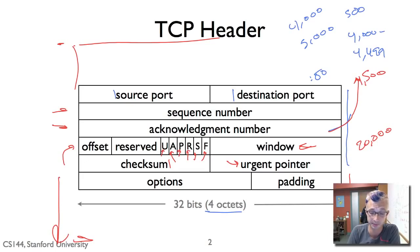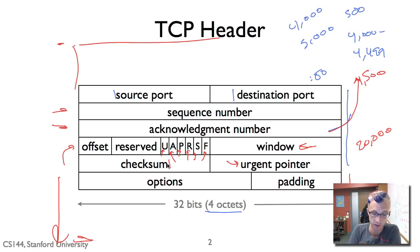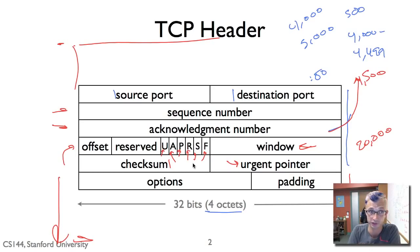So that's the basic TCP header. We have the source and destination ports; the sequence numbers for the data and acknowledgements; the offset field to tell you where data begins; the urgent and push bits for urgent or immediately-deliverable data; the ACK bit indicating the acknowledgement number is valid; the SYN bit for synchronizing the sequence number; the FIN bit for tearing down a connection; the reset bit for resetting a connection; the window for flow control; the checksum for error detection; and the urgent pointer and options.